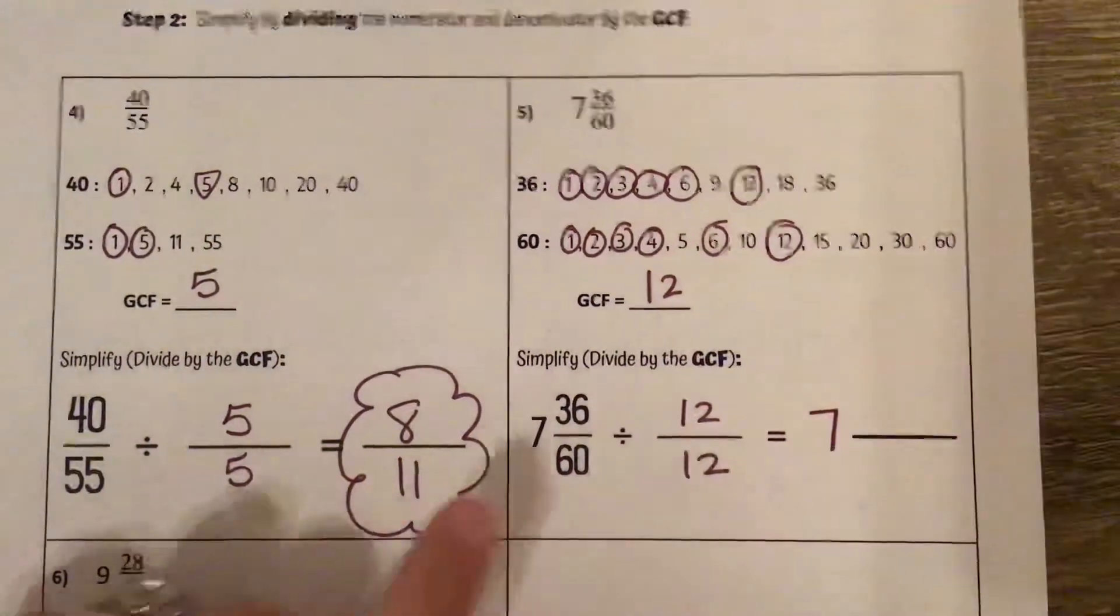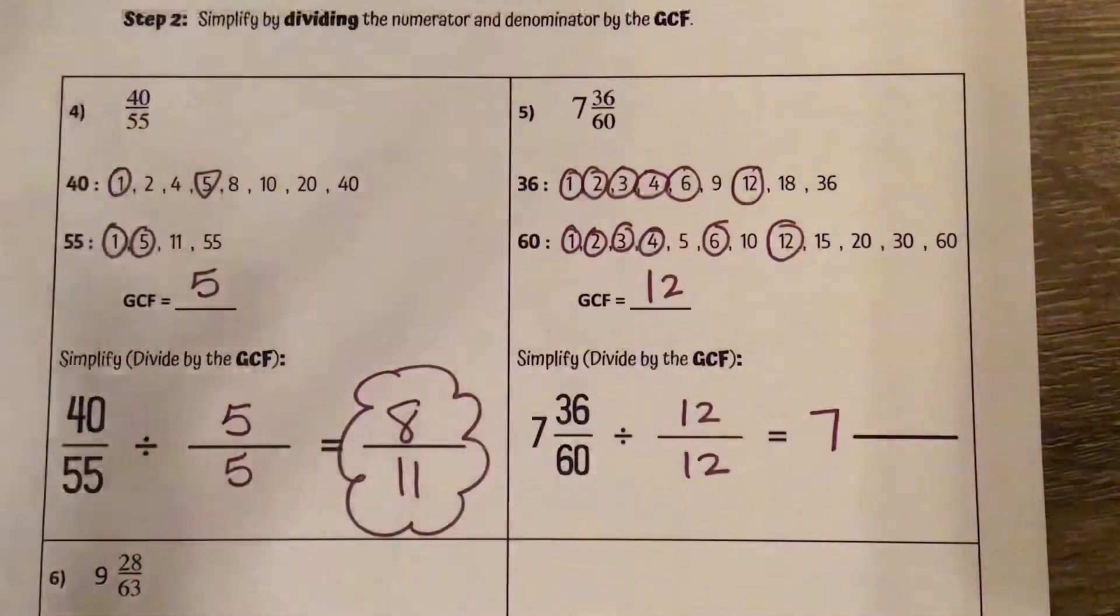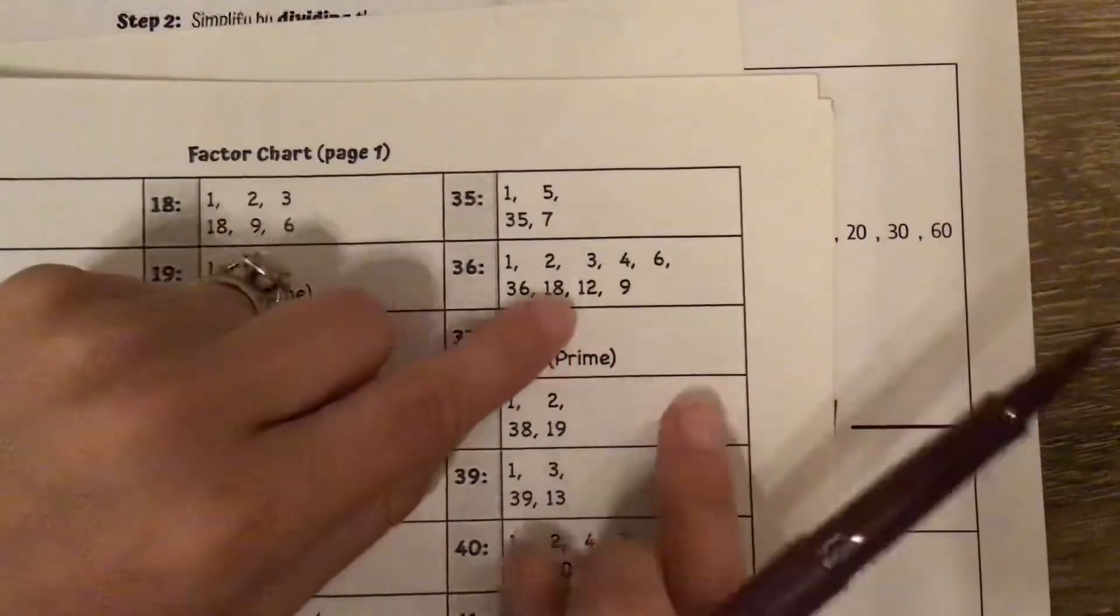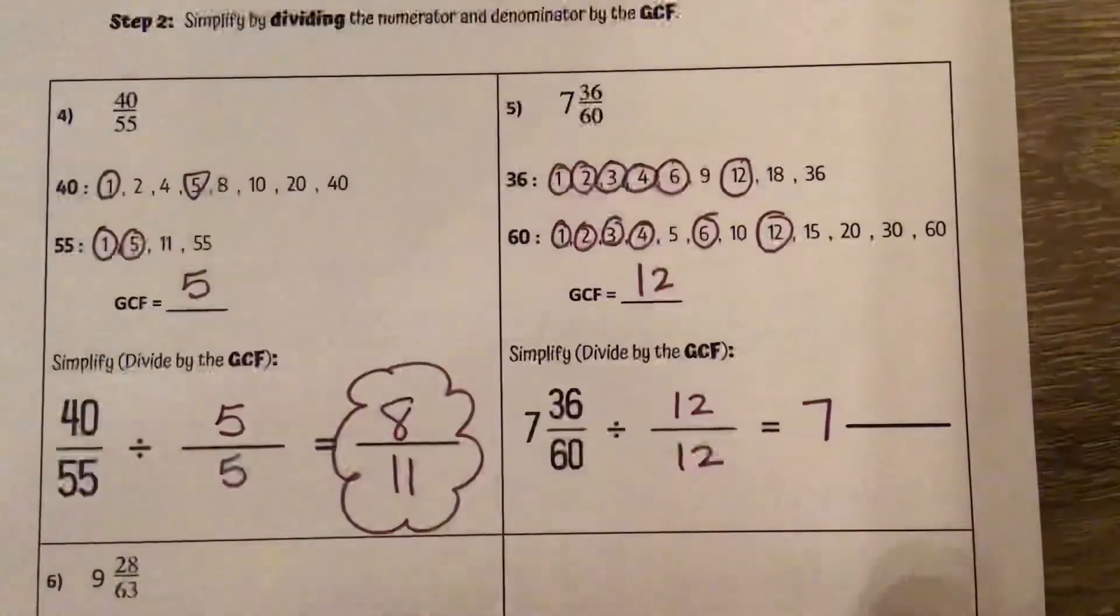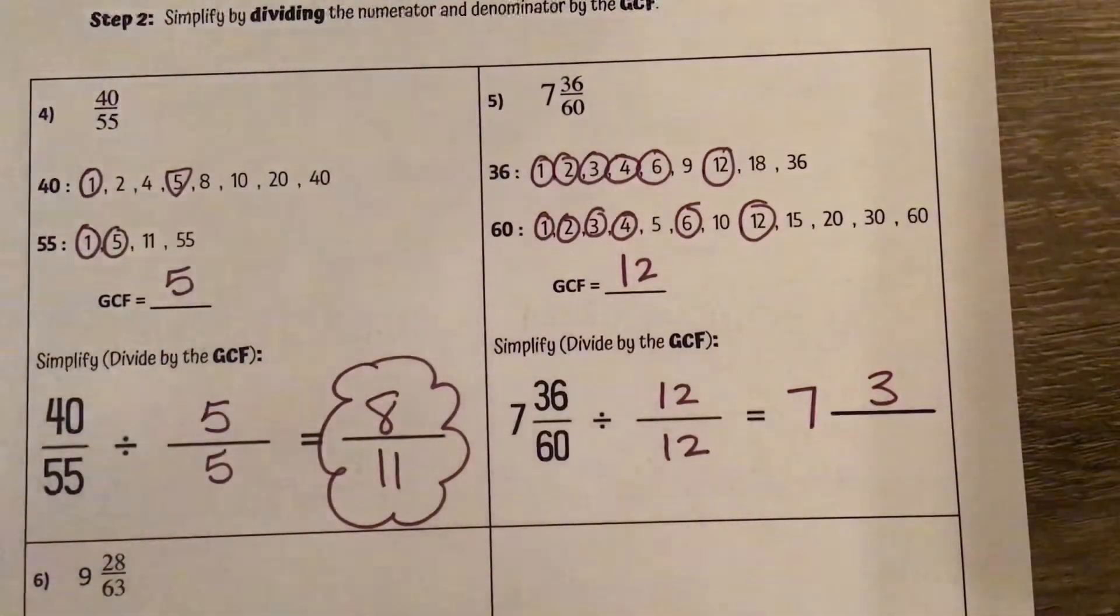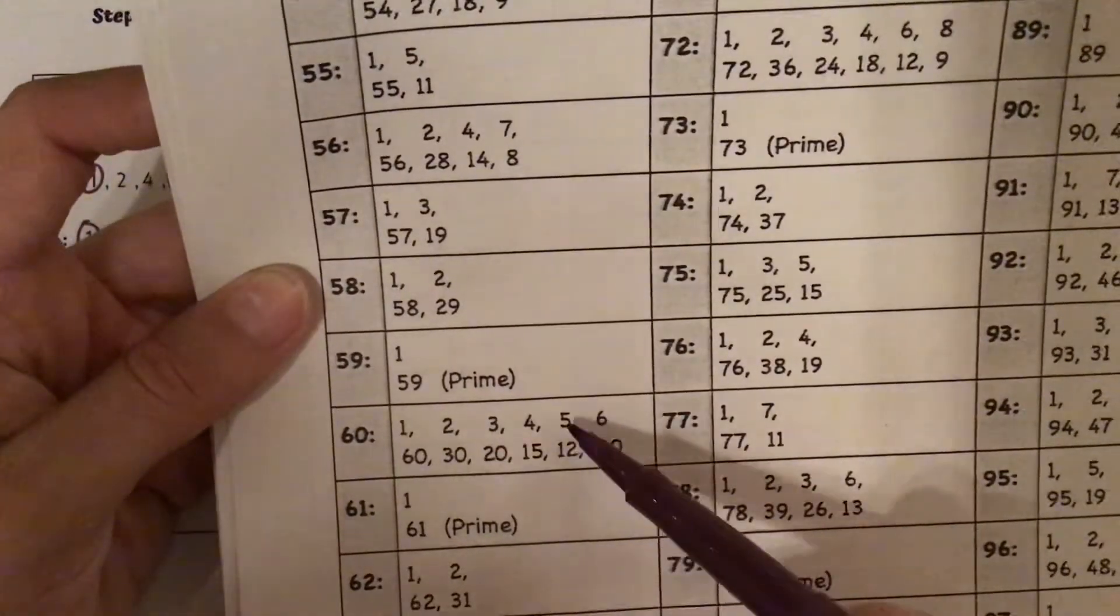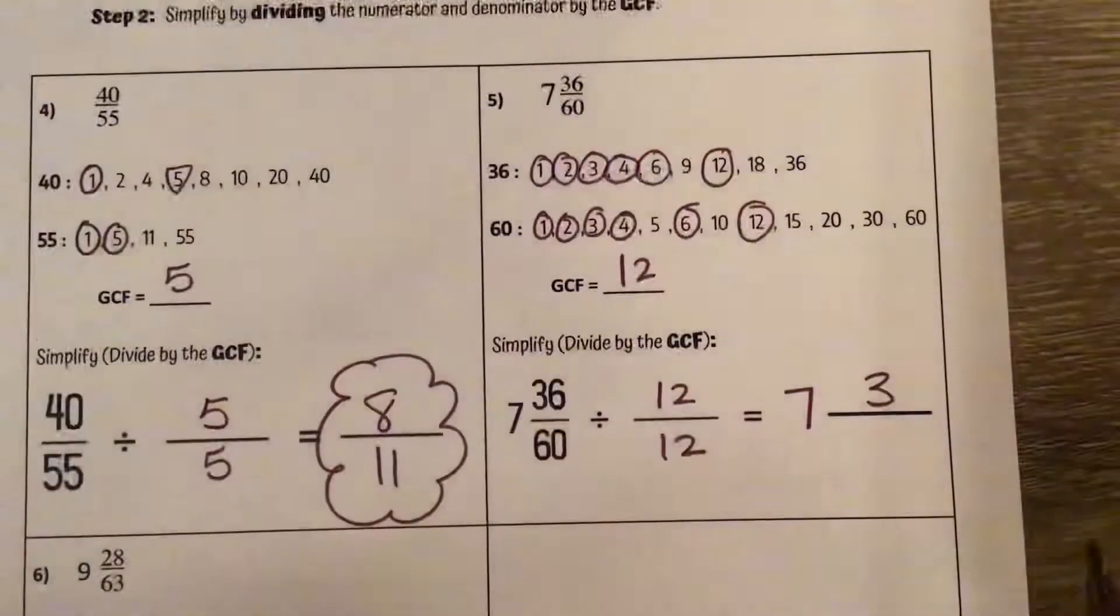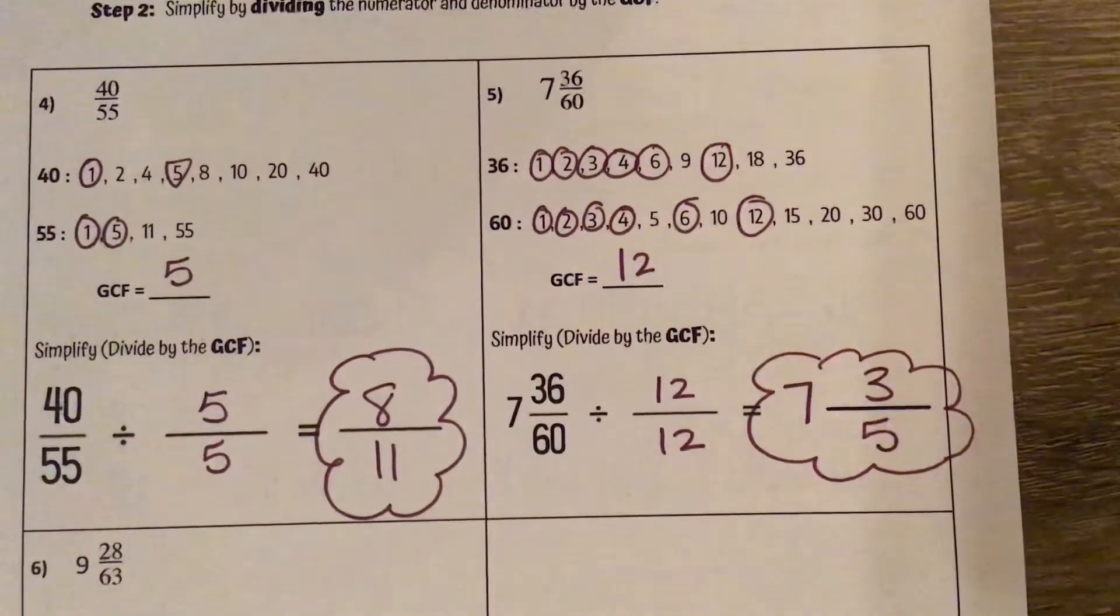The 7 is going to stay the same, so I can write that. Now we're going to simplify the fraction part. So 36, maybe I know what 36 divided by 12 is. If not, I'm going to look at my factor chart. The 12 matches up with 3. So 36 divided by 12 is 3. And 60, again, maybe you know what 60 divided by 12 is, but if not, looking on my factor chart, 12 matches up with 5, which means 60 divided by 12 is 5. So our simplified fraction is 7 and 3 fifths.